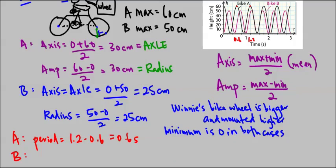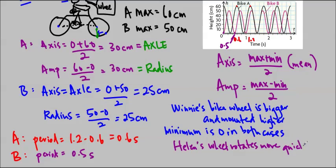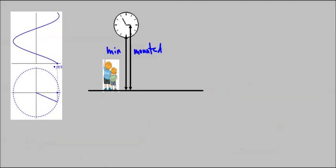For Helen, you can see that if we start at this point here, this is the minimum, and we go to this point here, which is about 0.5, so her period is equal to 0.5 seconds. So Helen's wheel rotates more quickly than Winnie's, because her period is smaller. So there you go. We've compared the two based on the axis, the amplitude, and the period.